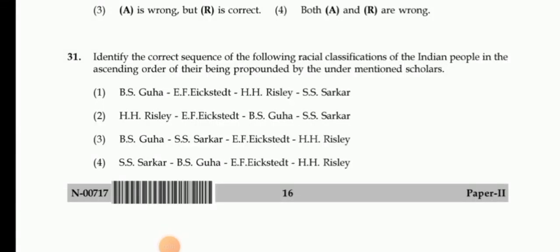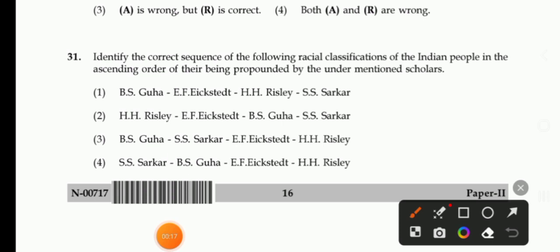Welcome again to Anthrozone. Today's first question, but 31st question of 2017 UGC NET Anthropology paper is: Identify the correct sequence of the following racial classifications of the Indian people in the ascending order of their being propounded by the under-mentioned scholar.